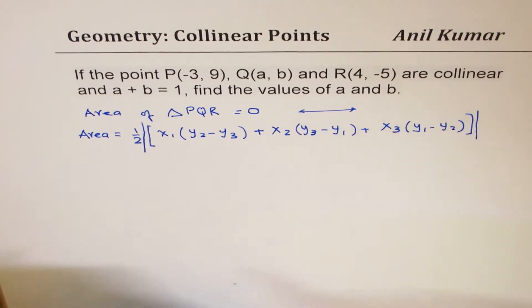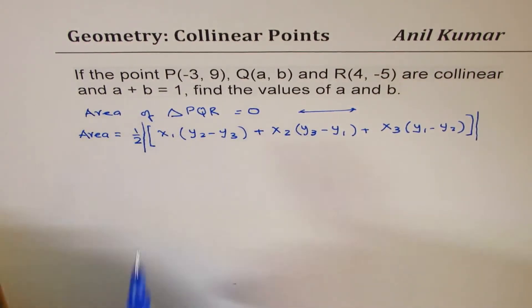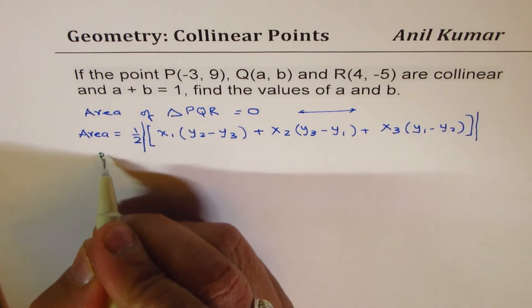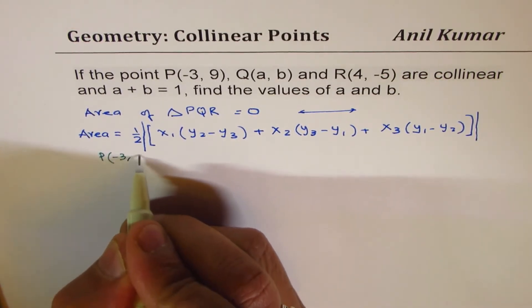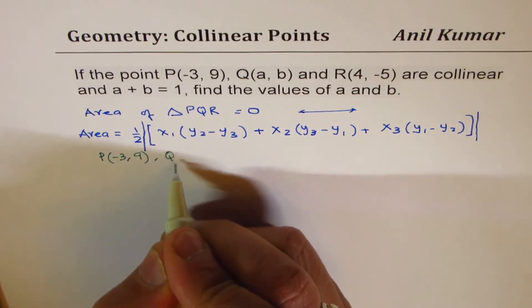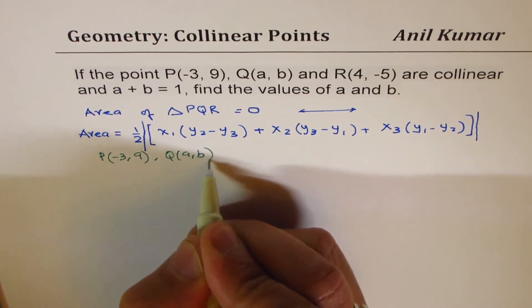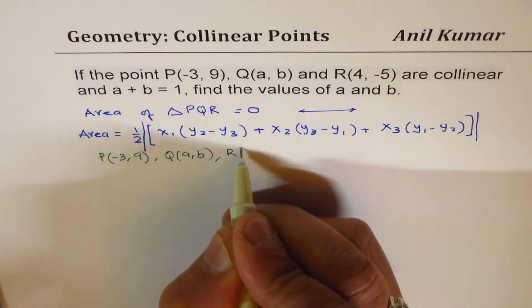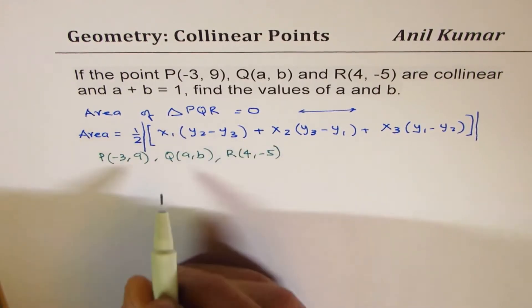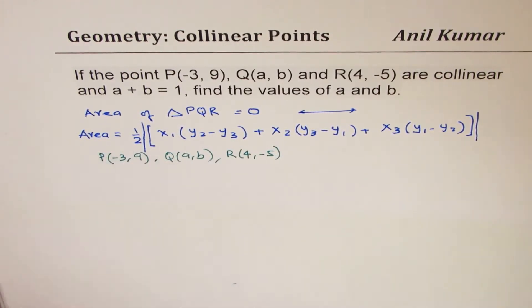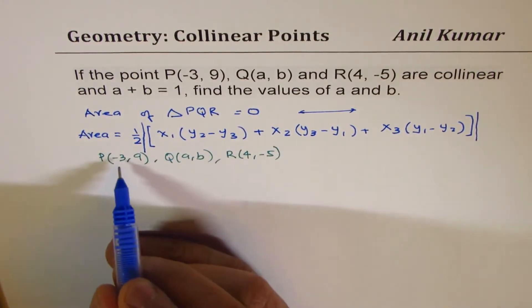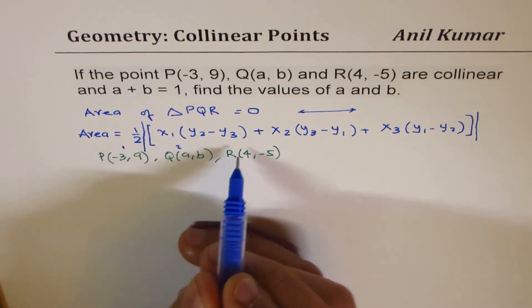Now in our case, we are considering the points: P is (-3, 9), Q is (A, B), and R is (4, -5). So we will consider this to be the first point. So we will use this as the order 1, 2, and 3.